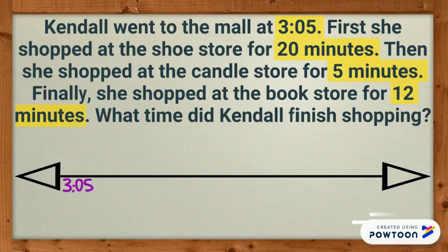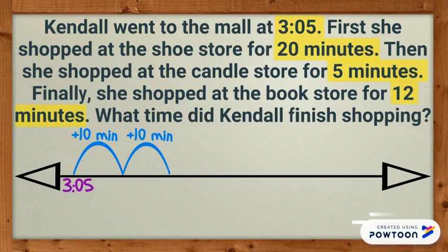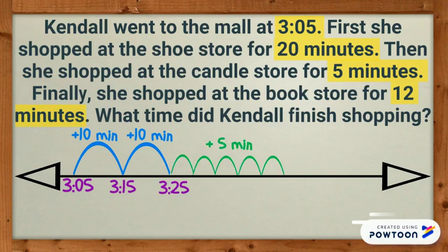Now I'm ready to start adding up the times from the story. First, I'll add 2 groups of 10 to 3:05, and first get to 3:15, then 3:25. Then I'll add on 5 minutes to get to 3:30.